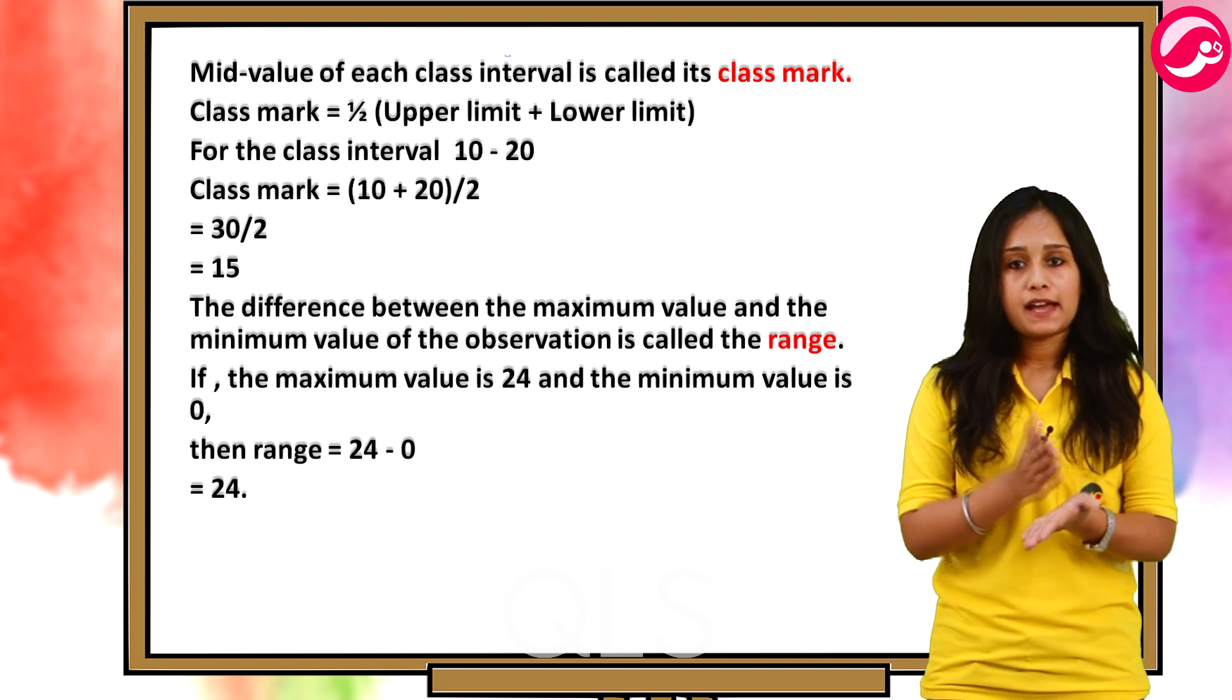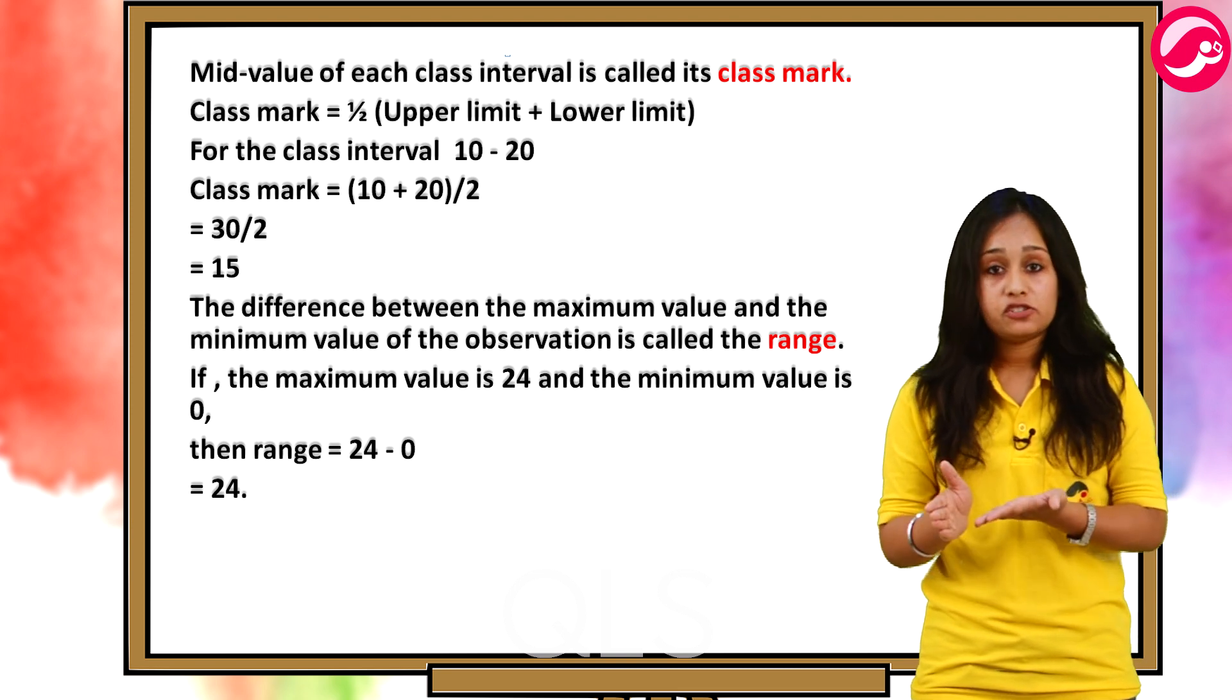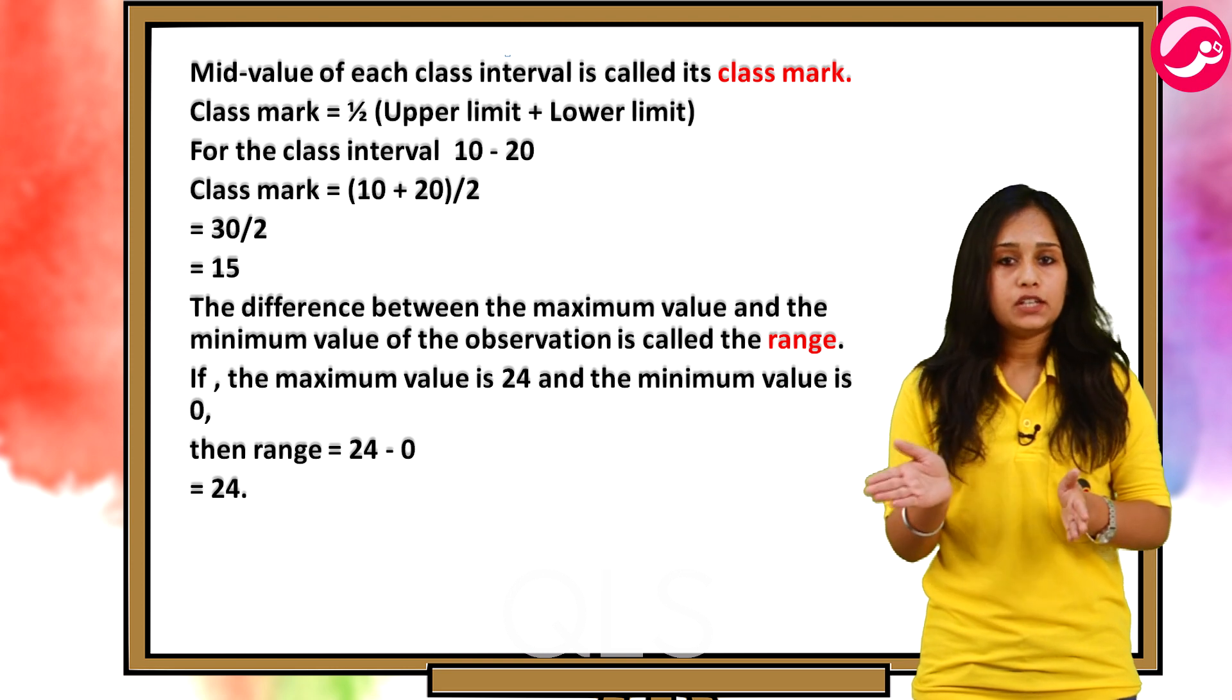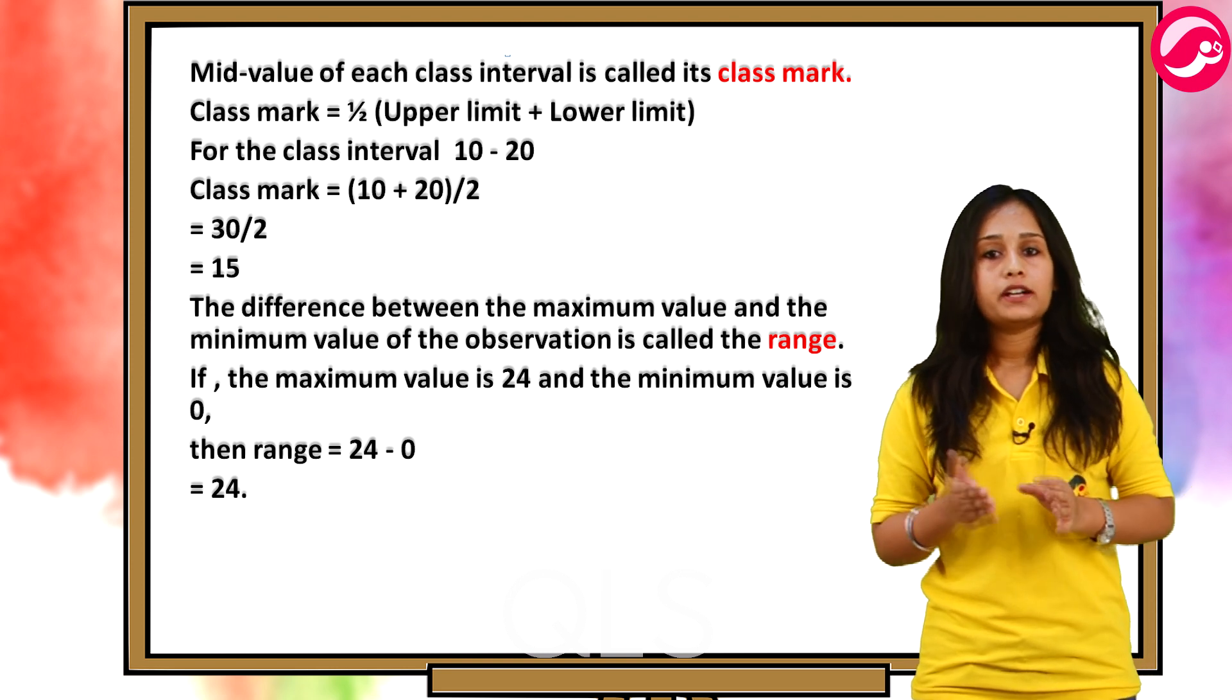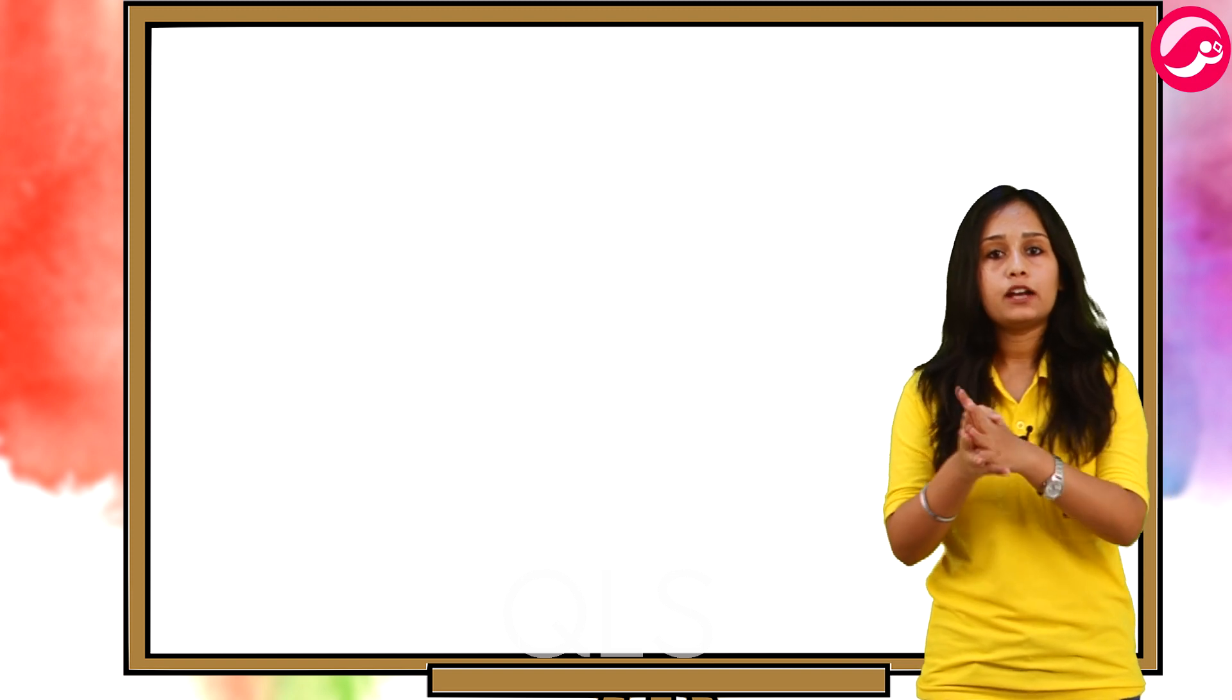The difference between the maximum value and the minimum value of the observation is called the range. If the maximum value is 24 and the minimum value is 0, then range will be equal to 24 minus 0 that is 24. So, this was the frequency distribution of ungrouped data and grouped data.